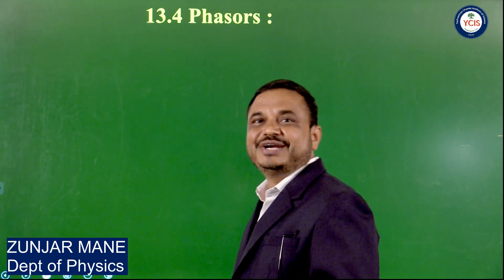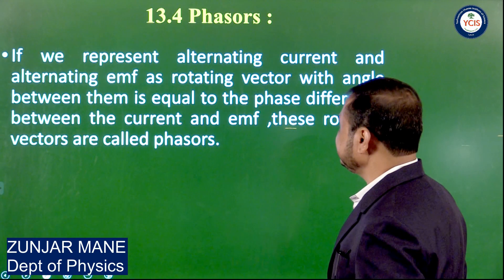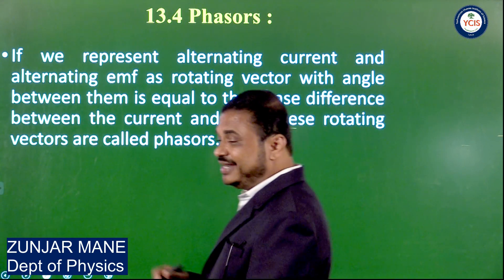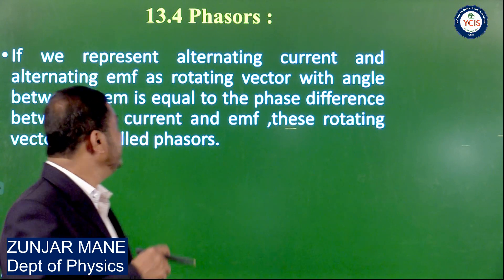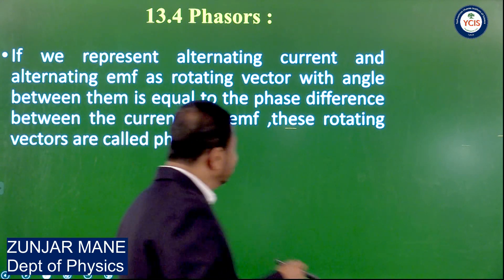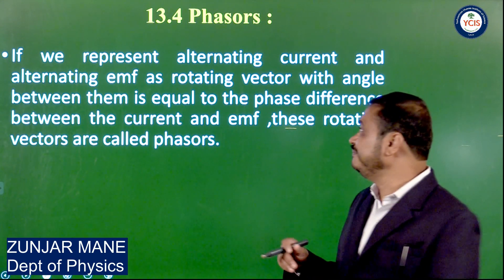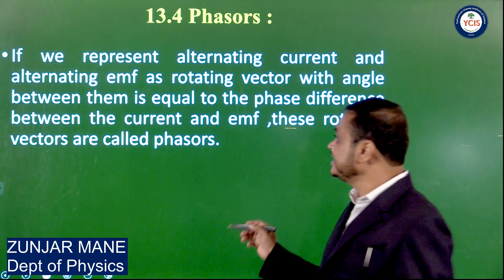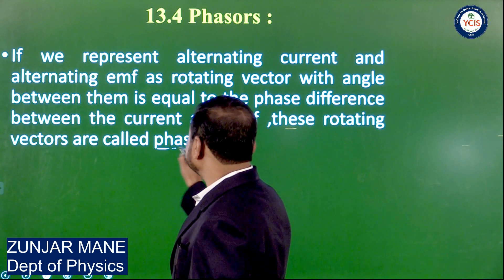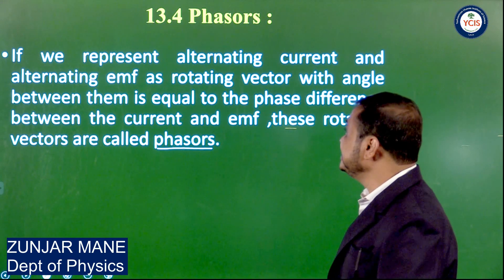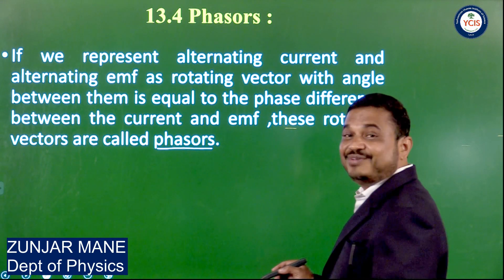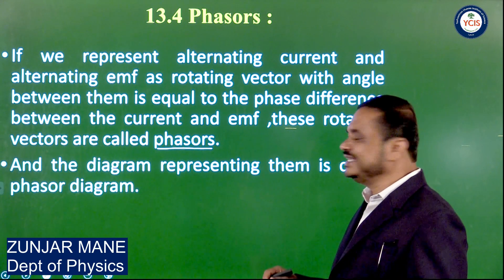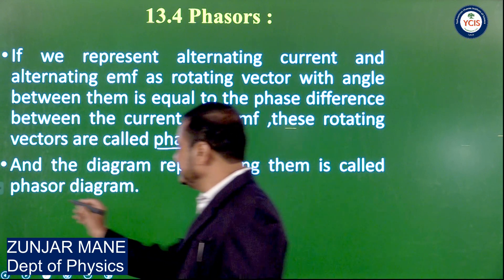Next, Article 13.4 — that is, phasor. If we represent the alternating current and alternating EMF as a rotating vector, with the angle between them equal to the phase difference between the current and EMF, these rotating vectors are called phasors. So phasors are a rotating vector which represents the sinusoidally varying voltage and current, and the diagram representing them is called a phasor diagram.